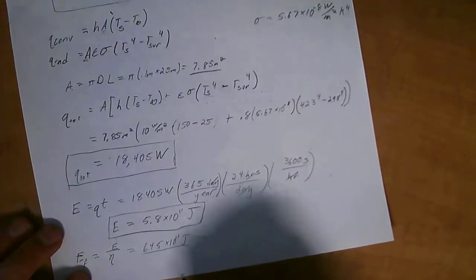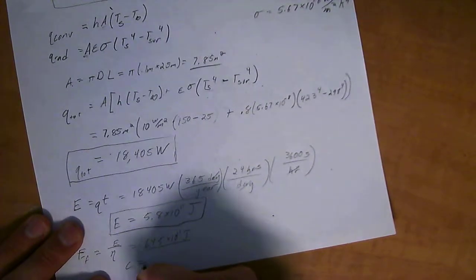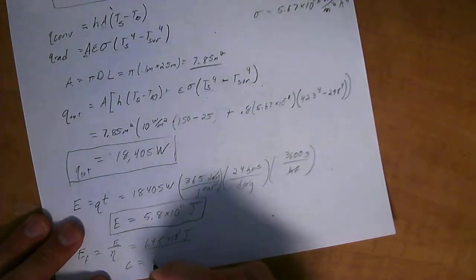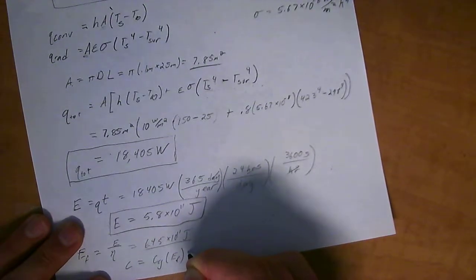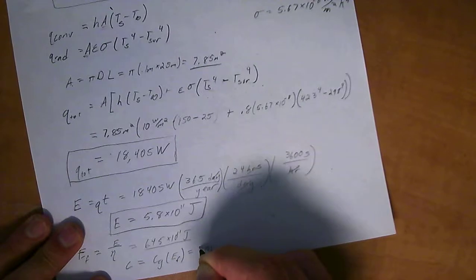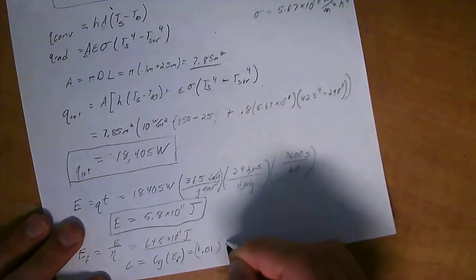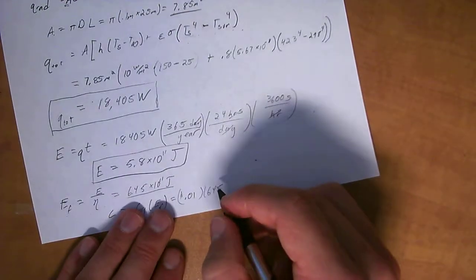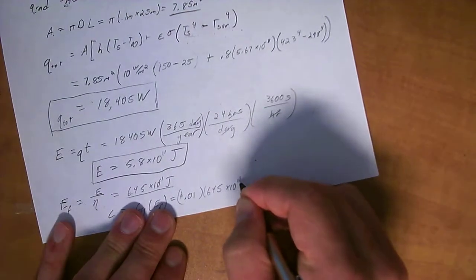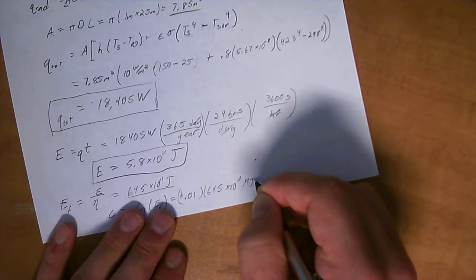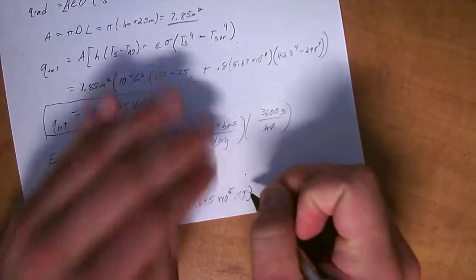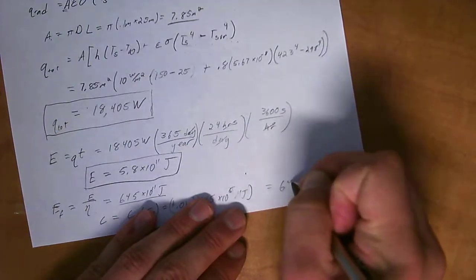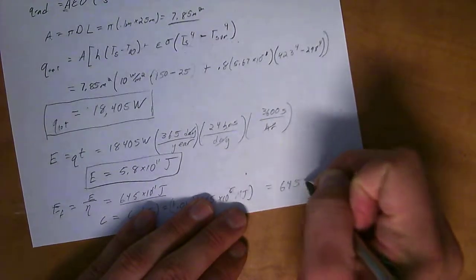And then the value of E up here, you'll end up with 6.45 times 10 to the 11th joules. That's how much energy that furnace has to produce. And so the total cost is equal to the cost of gas times the energy that the furnace uses. Which is equal to 0.01 dollars per megajoule times 6.45 times 10 to the 5th megajoules. Which is equal to 6400 bucks, basically.